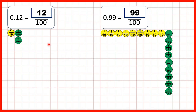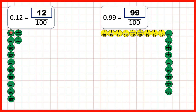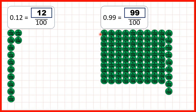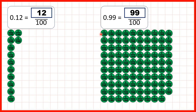We can also show this using place value counters. For 0.12, we have 1 in our tenths and 2 in our hundredths, but the 1 tenth is the same as 10 hundredths, so altogether we have 12 hundredths. For 0.99, we have 9 tenths and 9 hundredths, but each tenth can be exchanged for 10 hundredths, giving us 90 hundredths, making 99 hundredths altogether.